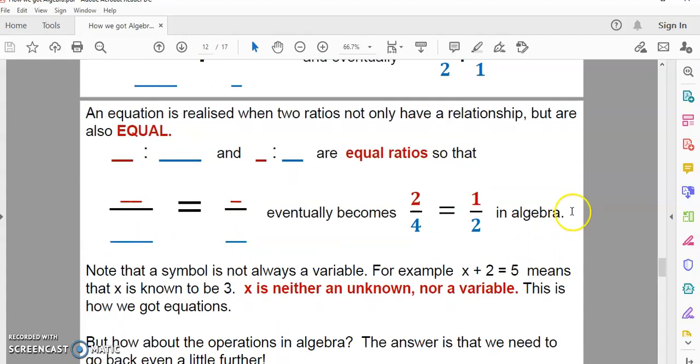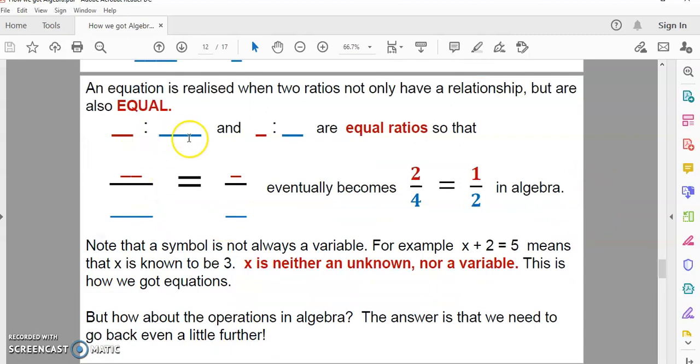So, an equation is realized when two ratios not only have a relationship, but are equal. For example, these two are equal ratios, and we could write it as 2 over 4 is equal to 1 over 2 in algebra. Note that a symbol is not always a variable. For example, if we have x plus 2 equals 5, this means that x is known to be 3. X is neither an unknown nor a variable in this equation. And this is how we got equations.